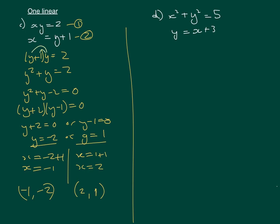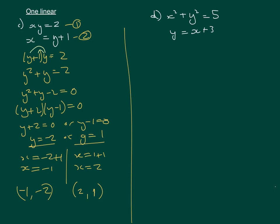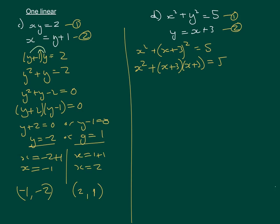Moving on to example D: x squared plus y squared equals 5, and y equals x plus 3. Instead of y we write x plus 3, giving x squared plus (x plus 3) all squared equals 5. Expanding: x squared plus x squared plus 6x plus 9 equals 5. We collect like terms and make it equal to 0, since we're going to have a quadratic.